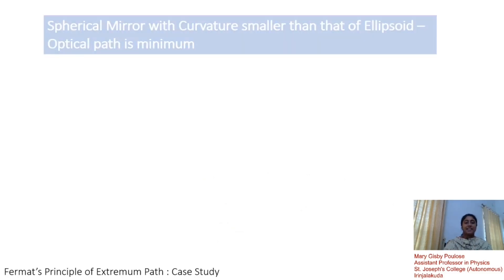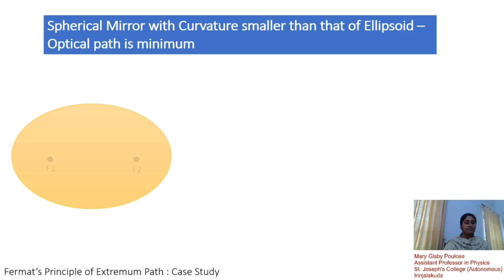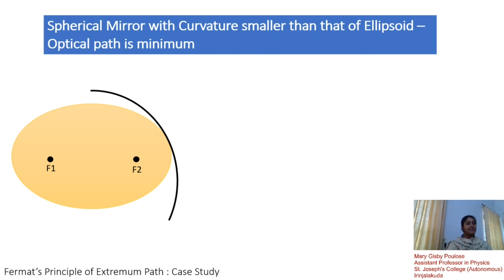In the second case, we have a spherical mirror with curvature smaller than that of an ellipsoid. Here, the optical path obtained will be a minimum. For that, let us consider an ellipse as shown. It has two focal points, f1 and f2. We are placing a spherical mirror of smaller curvature than that of an ellipsoid at one of its edges.